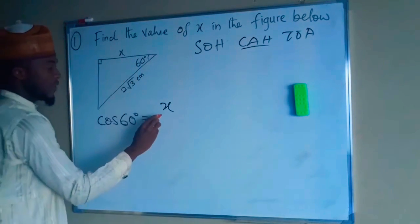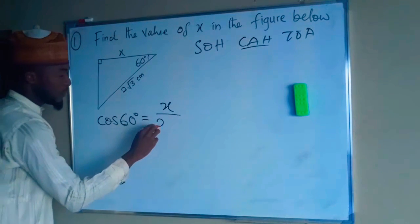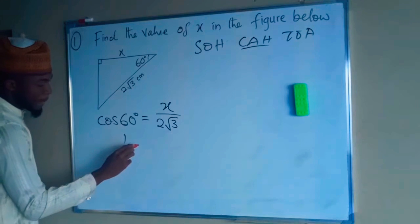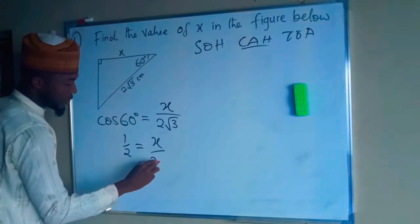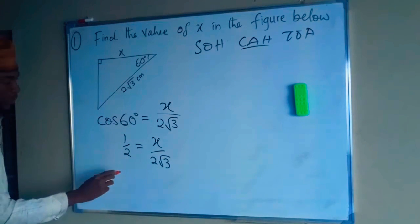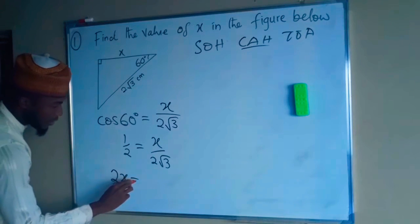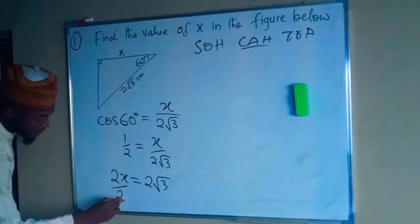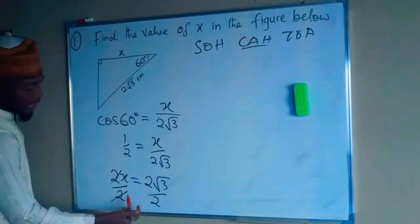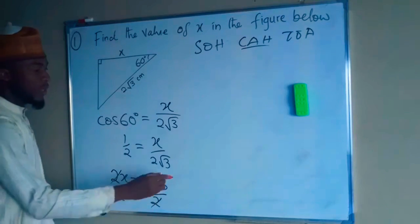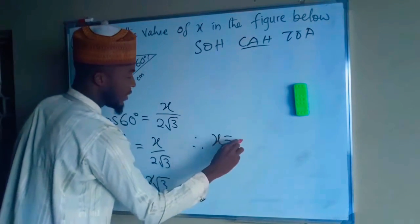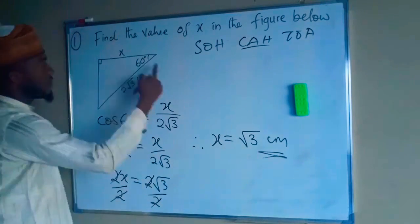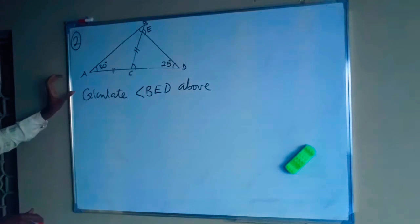The adjacent is X and the hypotenuse is 2√3. Since cos 60° = 1/2, we have 1/2 = X divided by 2√3. By cross multiplication, 2X = 2√3. Dividing both sides by 2, the 2s cancel, so X equals √3 centimeters. That is the value of this adjacent side.